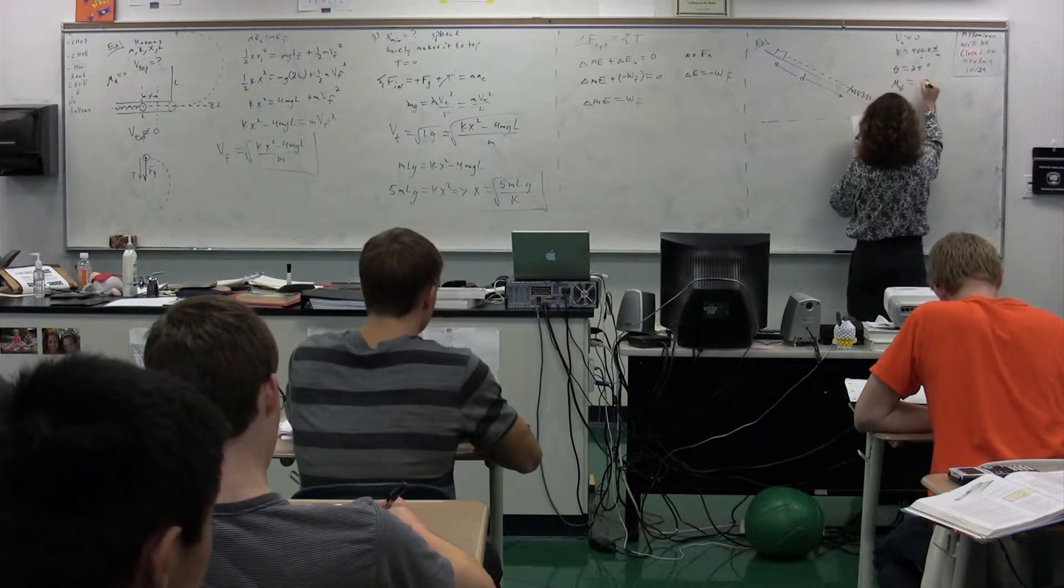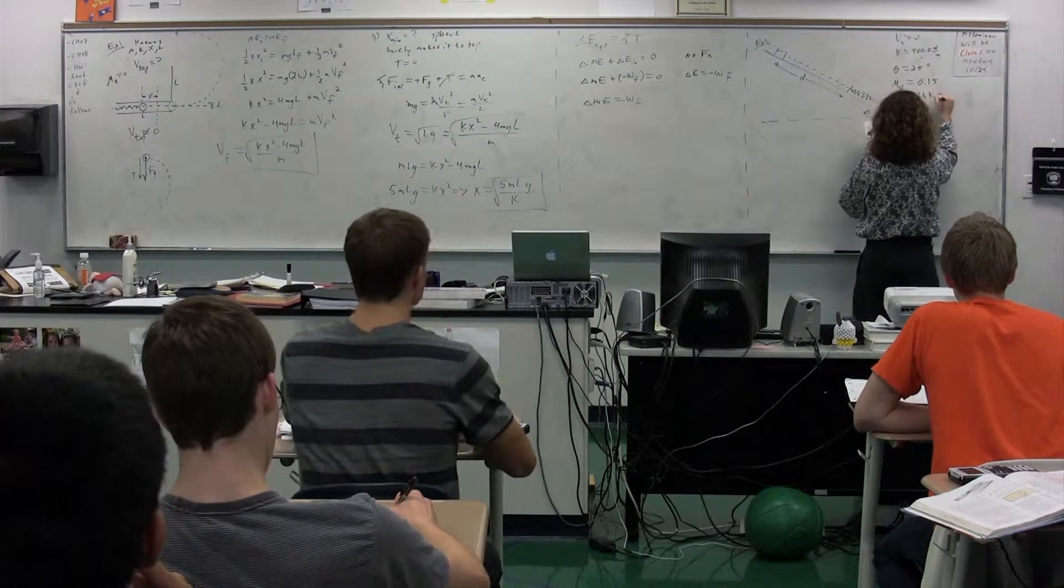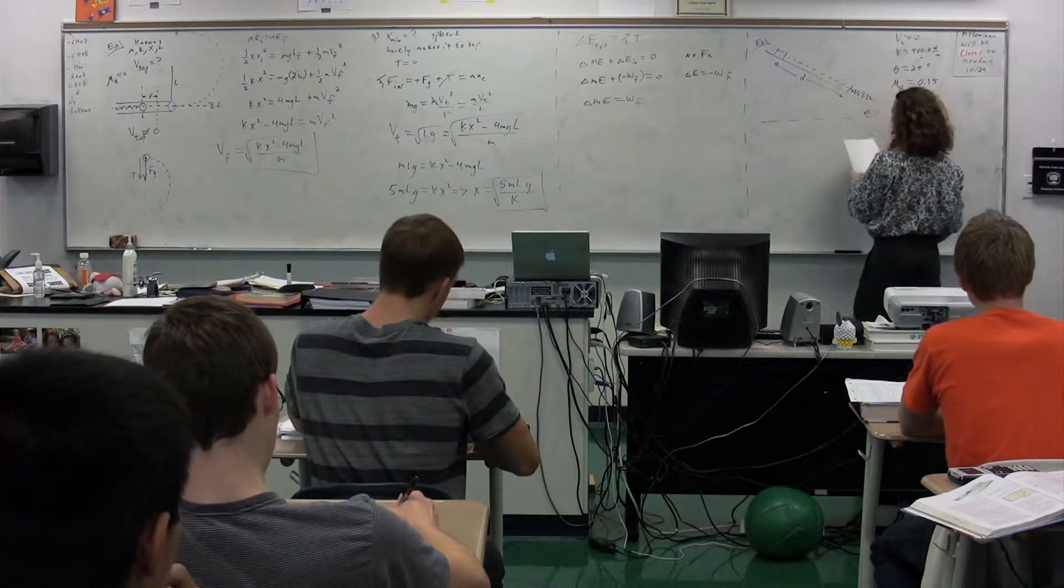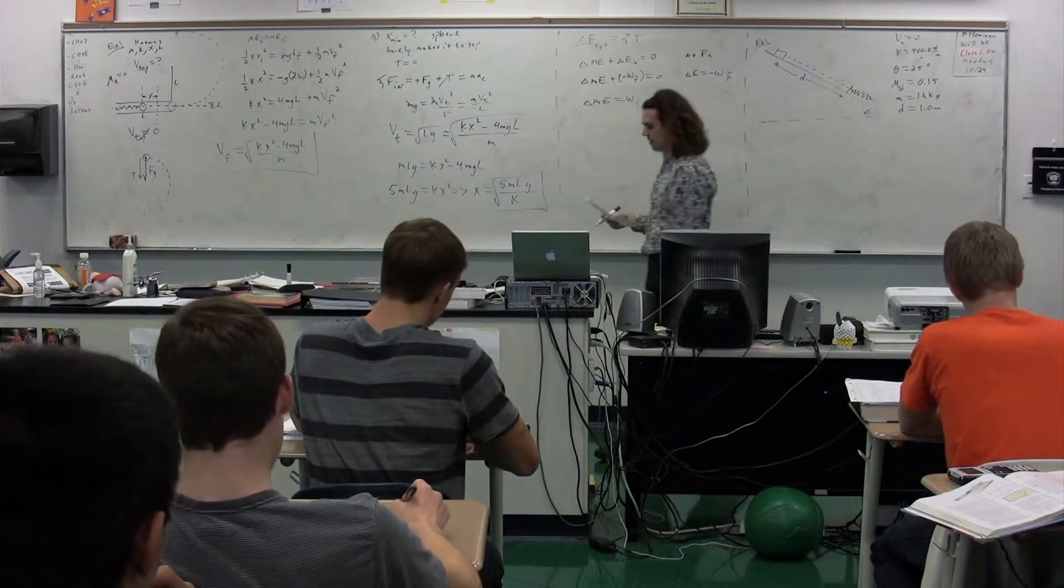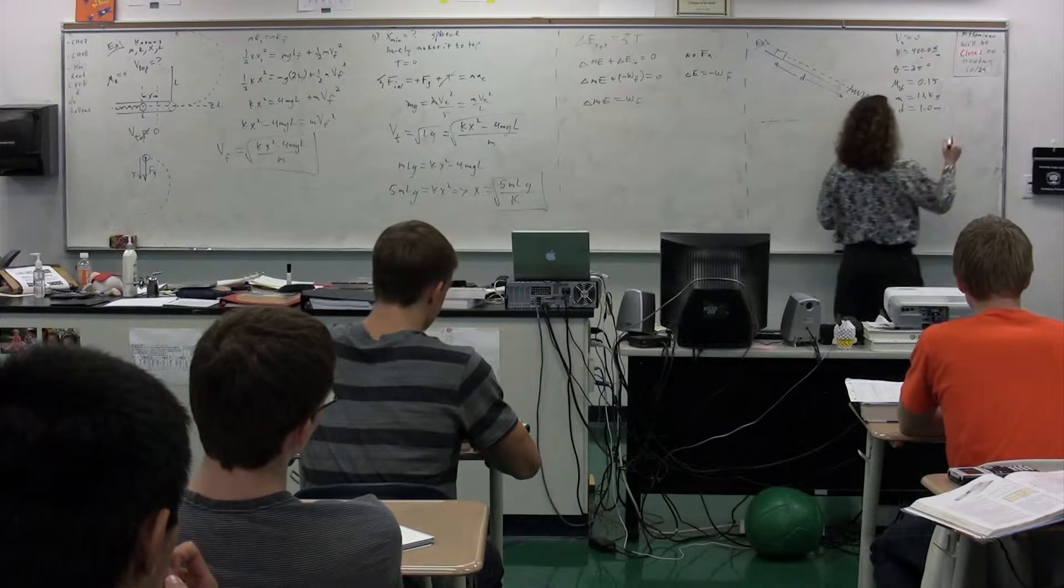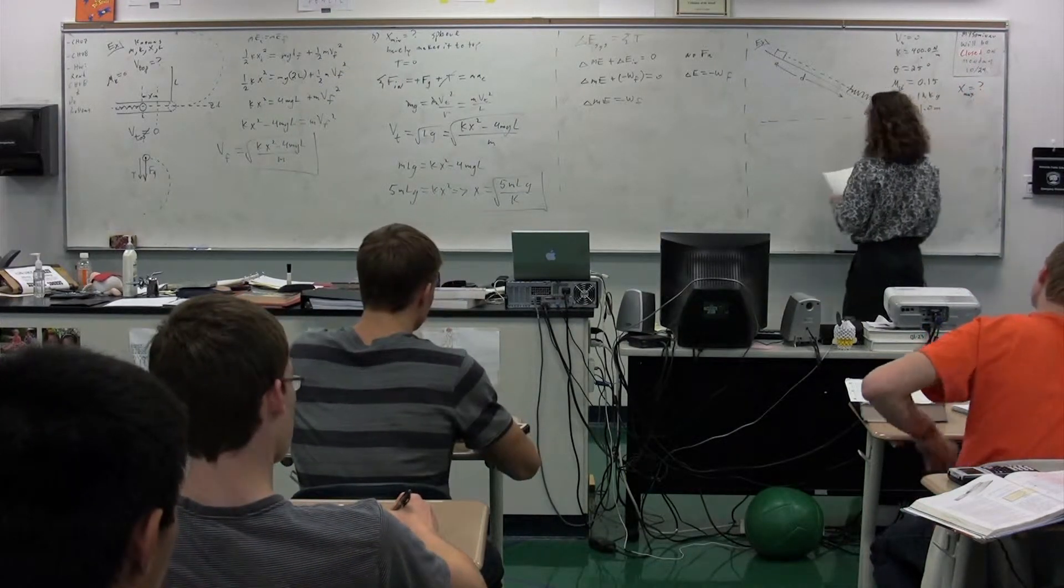The coefficient of kinetic friction is 0.15. The mass of the object is 12 kilograms. The d that it starts at is 1.0 meters. Again, that's from the relaxed length of the spring. And what we're trying to do is figure out what is the compression, the maximum compression of the spring.